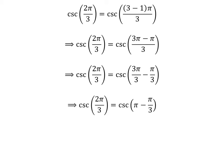Cancelling out the common factor in the numerator and the denominator gives us cosecant of 2 times pi upon 3 is equal to cosecant of pi minus pi upon 3.